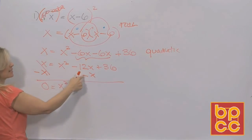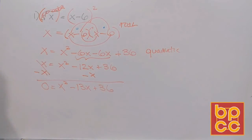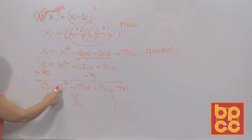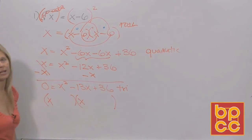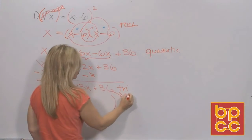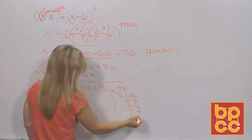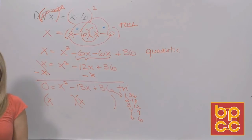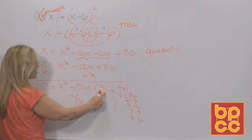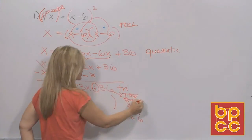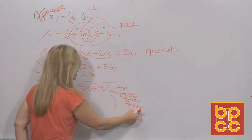Now I have x squared minus 13x plus 36 set equal to zero. Does it factor? No GCF, not difference of perfect squares, but it is a trinomial — three terms in the correct order — so we put two parentheses. x squared gives x times x. What multiplies to 36? We have 1×36, 2×18, 3×12, 4×9, 6×6. I need factors that multiply to 36 and add to 13. Does 4 and 9 add to 13? Yes.